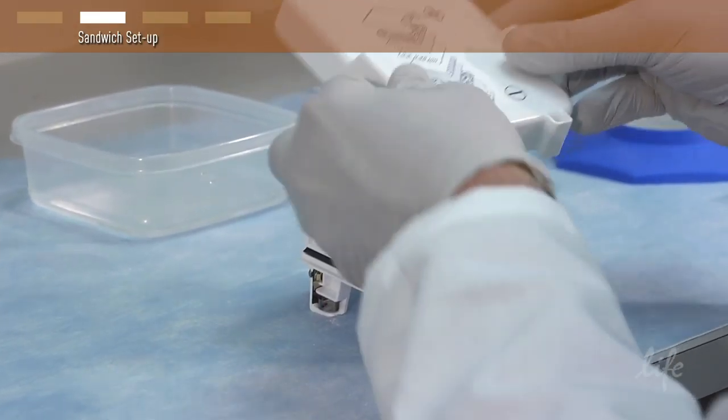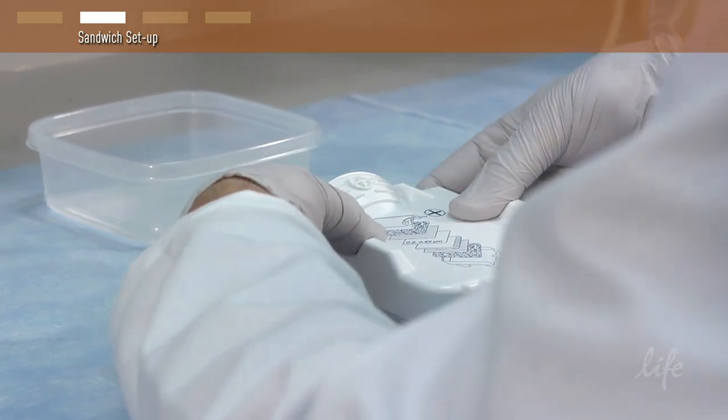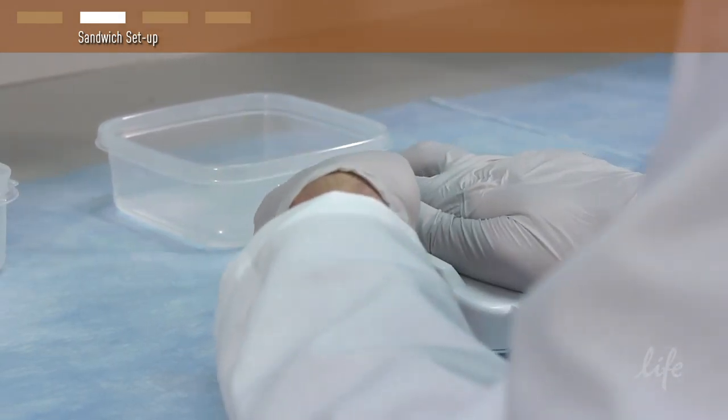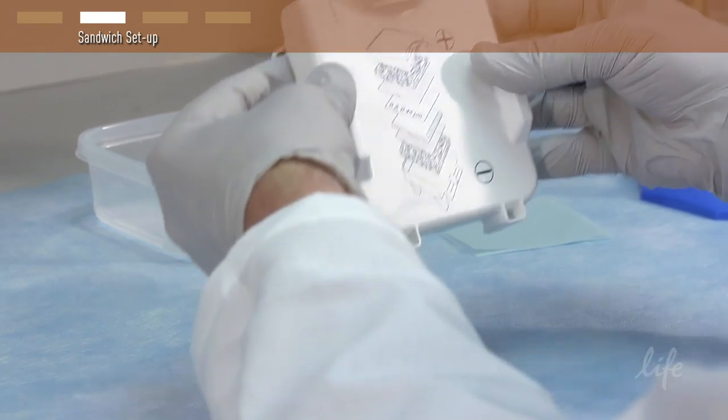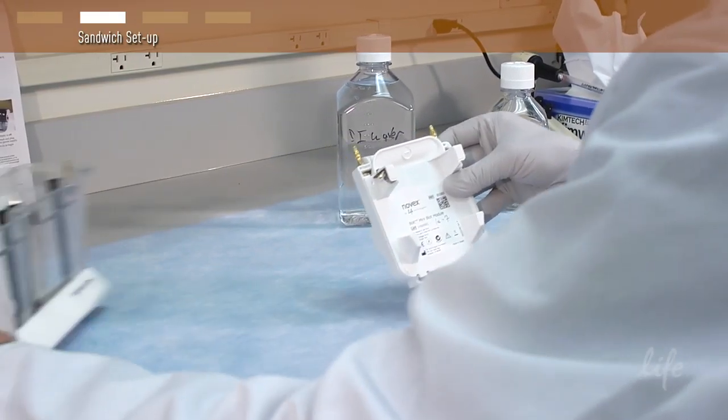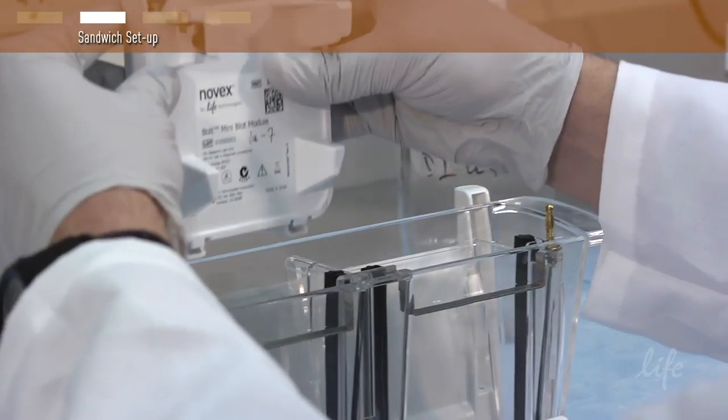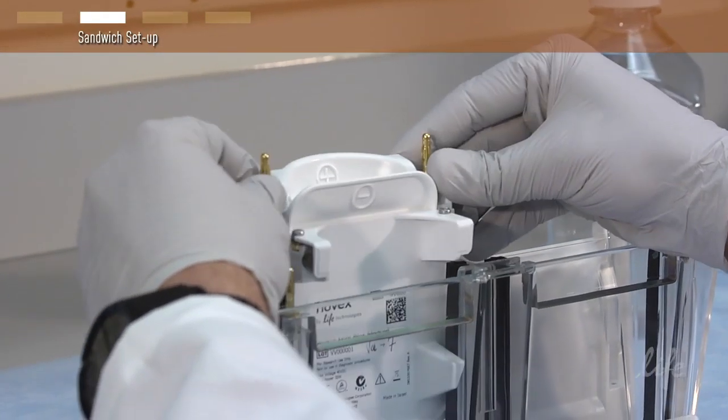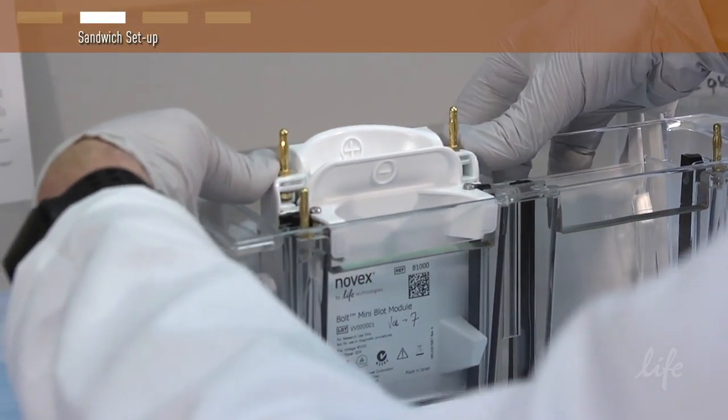Complete assembly by placing the anode or positive core on top of the sandwich and press the two module halves together. Insert the blot module into the Bolt tank with the cathode core facing the front of the tank. The blot module should be seated with the electrodes contacting the electrode bar.